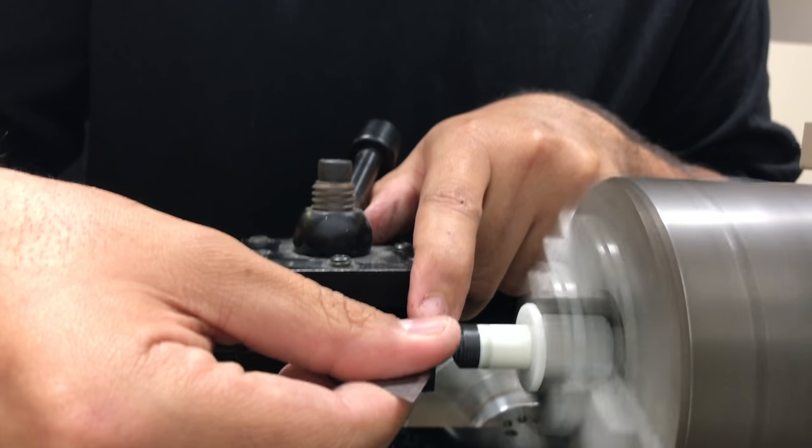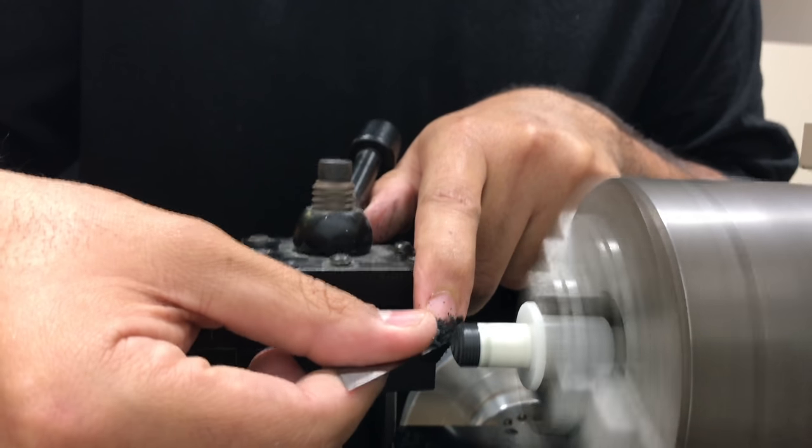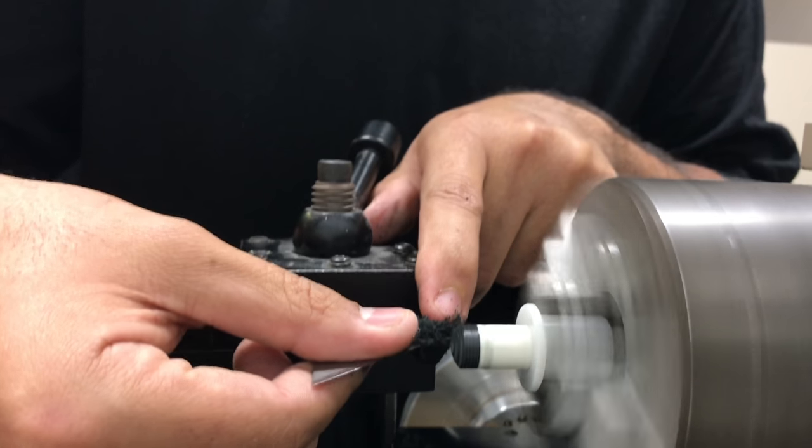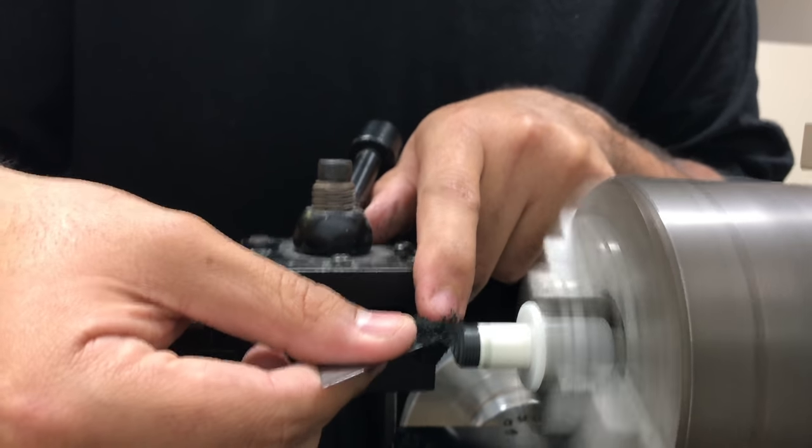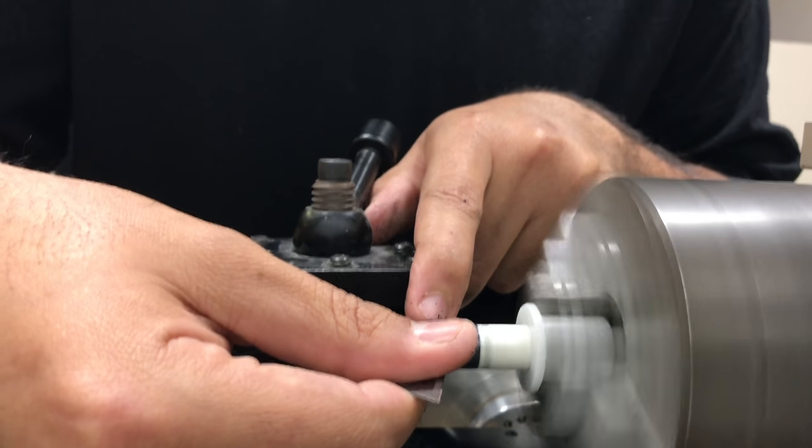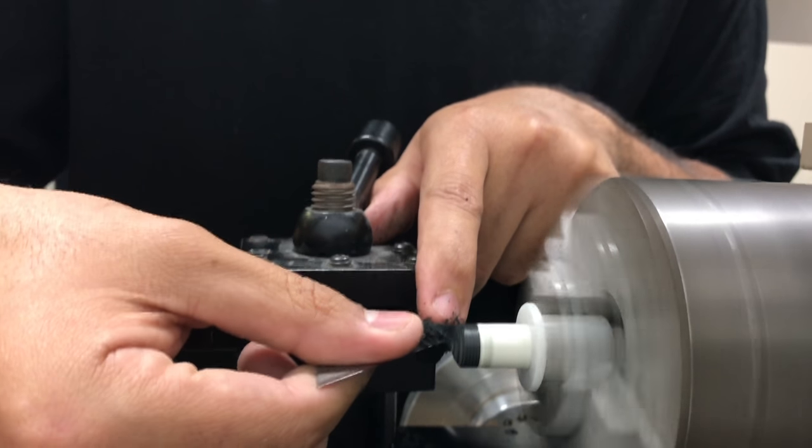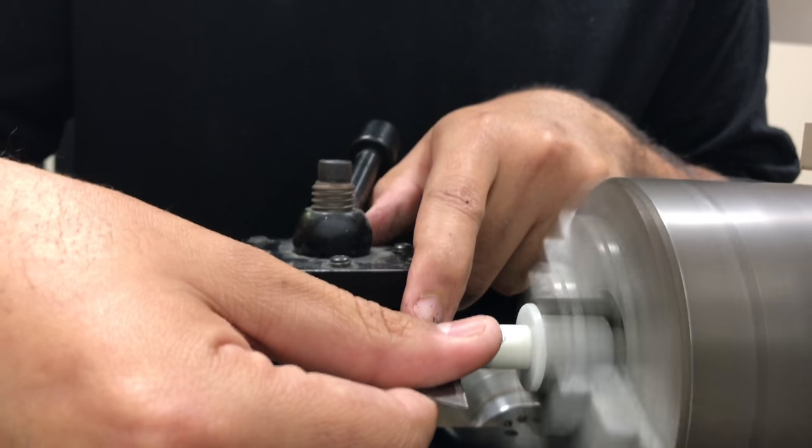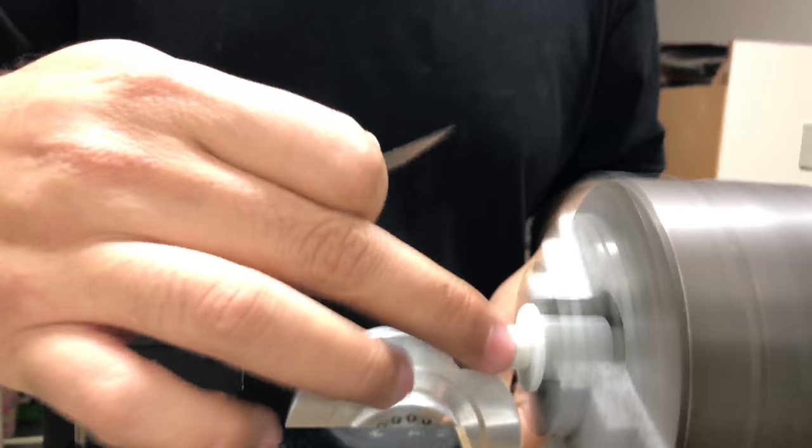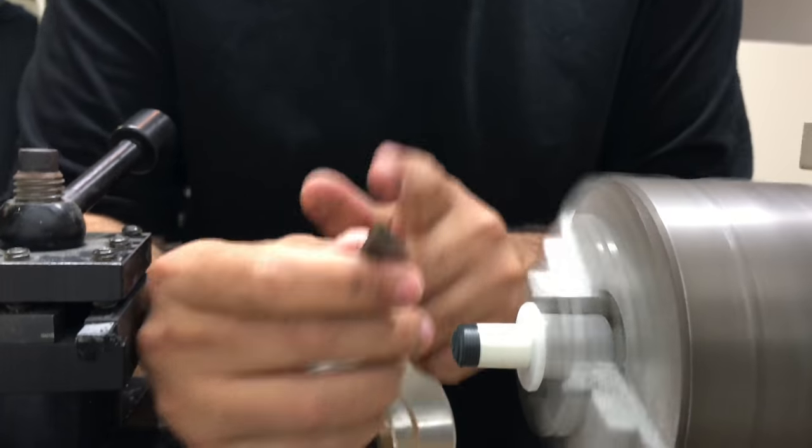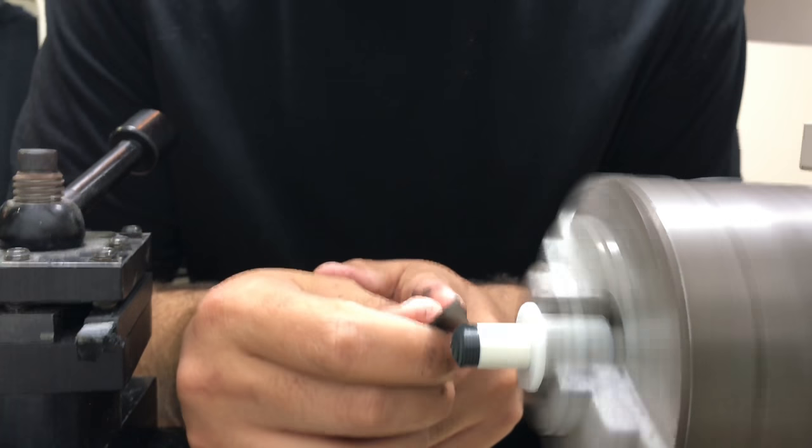And I'm taking quite a bit of material off because I like my tips; I don't like them to sit very high. All right, now that I got the curvature that I want, I'm gonna go back into that final clean cut.